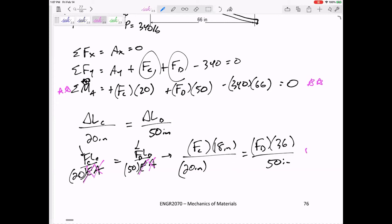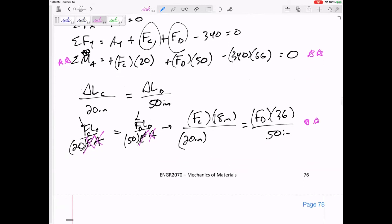Now I have two equations, two unknowns. So I'm skipping a little bit, but I write one in terms of the other plug back in. I've got FC is 272 pounds and FD, 340 pounds.